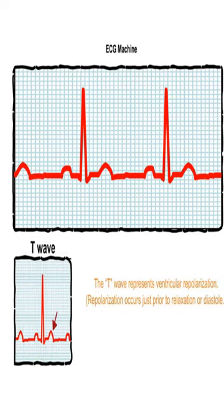The T wave represents ventricular repolarization. Repolarization occurs just prior to relaxation, or diastole.